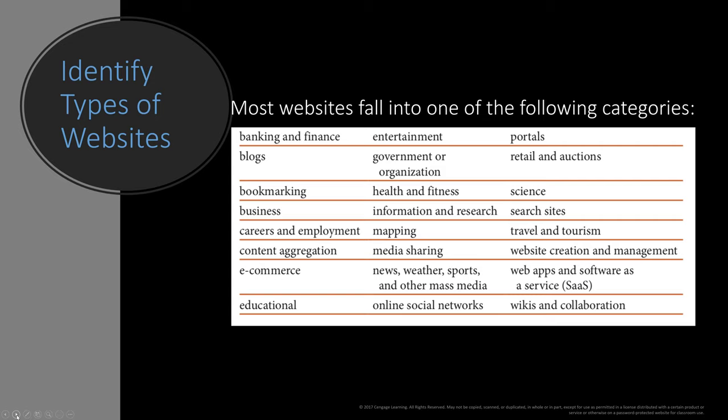Entertainment — Netflix rings a bell, Amazon Prime Video rings a bell. Health and fitness, mapping like Google Maps, MathQuest, media sharing — YouTube is a great example. Online social networks: Facebook is one, LinkedIn is another. LinkedIn is an online social networking site for professional networking. Search sites — Google, Bing, Yahoo. And retail and auctions, which we'll get into.